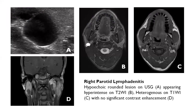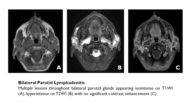Coming to the cases. This is a case of right parotid lymphadenitis, which shows a rounded hypoechoic lesion on ultrasound, appearing hyperintense on T1, hyperintense on T2, heterogeneous on T1, with no significant contrast enhancement. Here is another case of right parotid lymphadenitis, with multiple lesions throughout bilateral parotid glands, which are isointense on T1, hyperintense on T2, with no significant contrast enhancement.